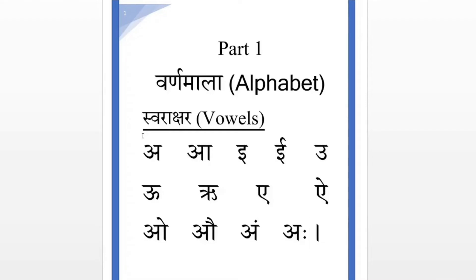Hi children. Today we learn about Hindi Varnamala. Varnamala means alphabet. Alphabet is divided into vowels and consonants. The same way, Varnamala is divided into Swar and Venjan. Swar means vowels, Venjan means consonants. First we learn how to read the Swar. In written form, we call them Swarakshar and Vyanjanakshar.